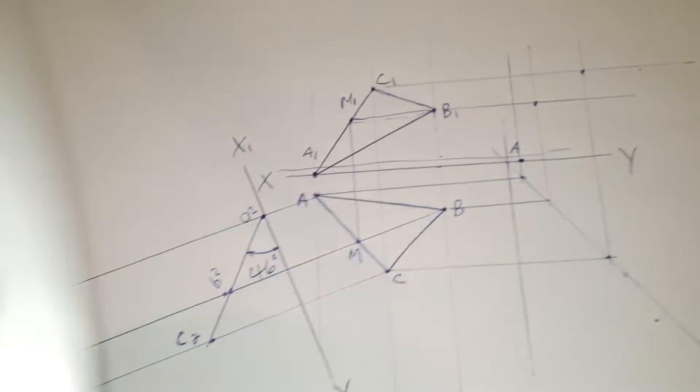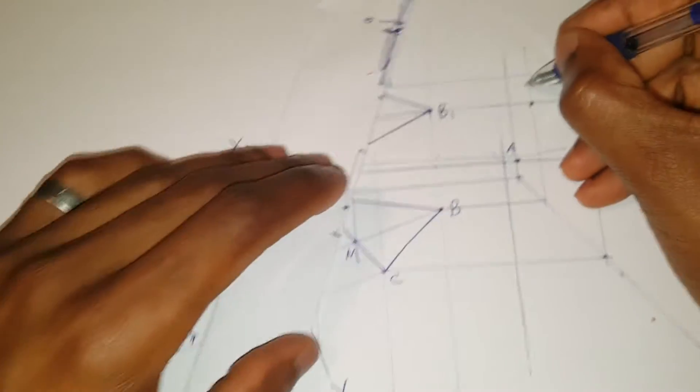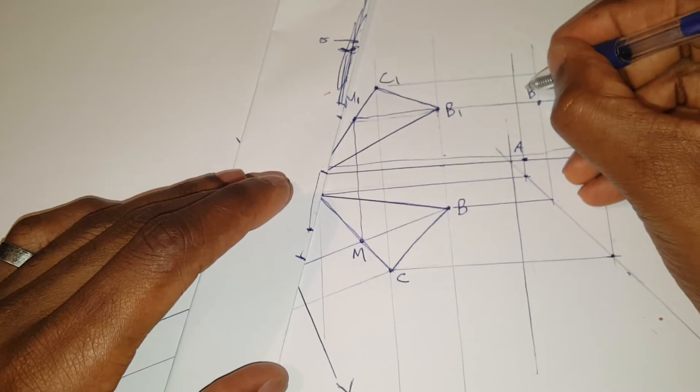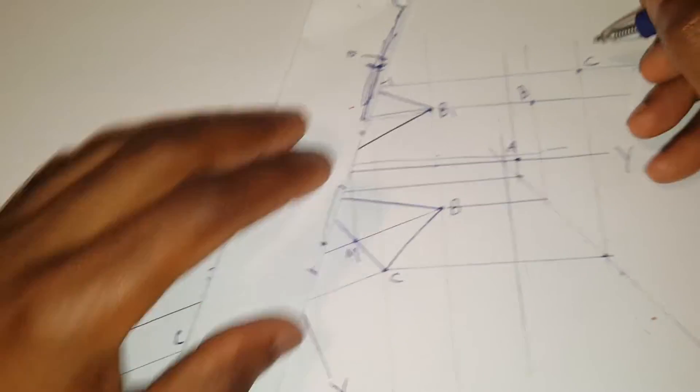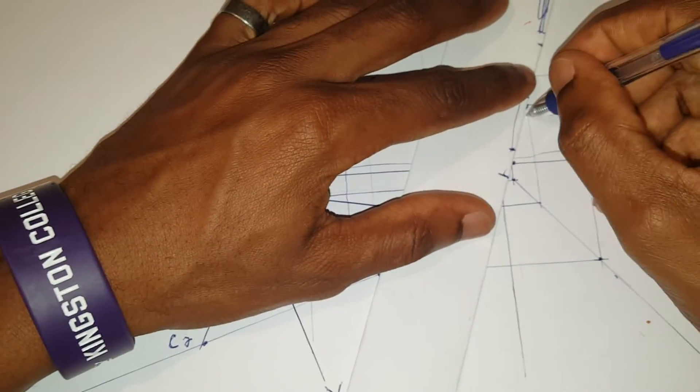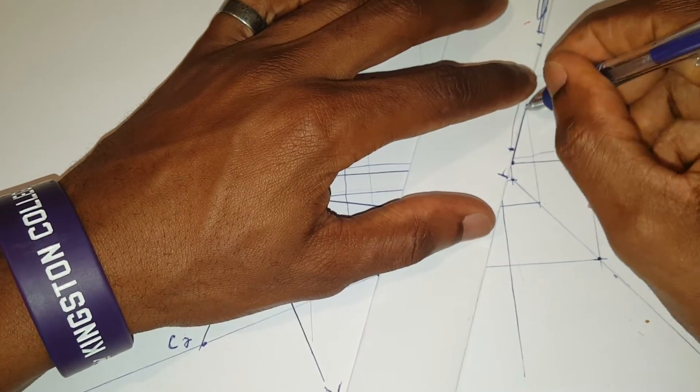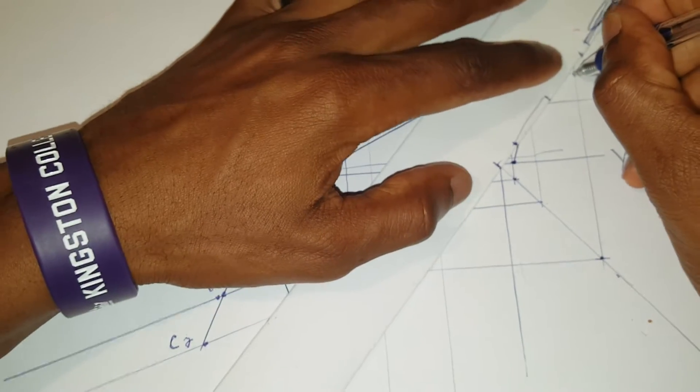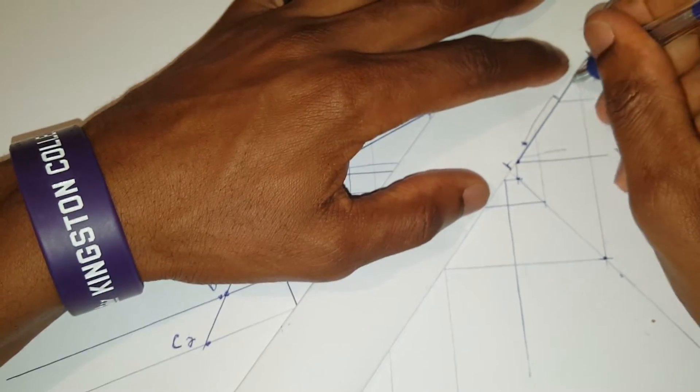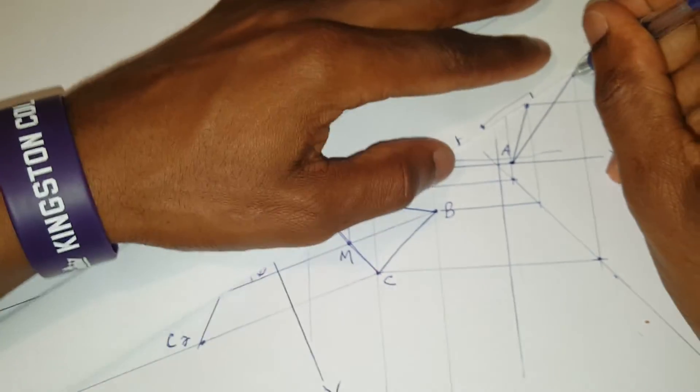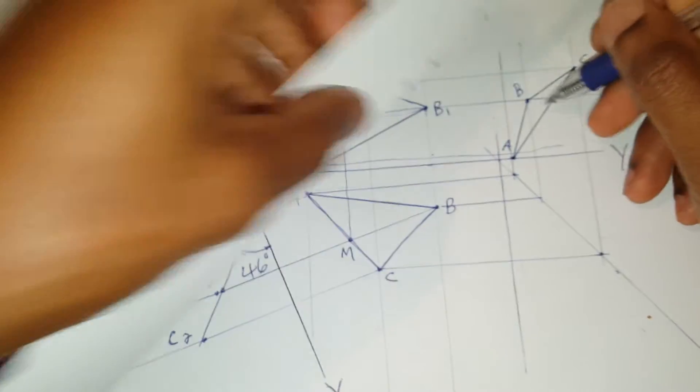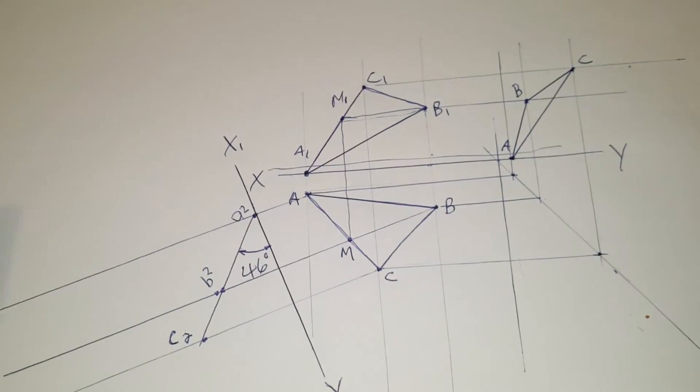I then join. This is B. Then join A to B. And this is our end elevation.